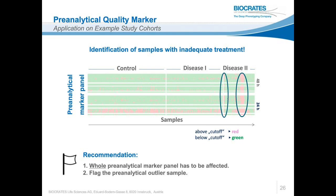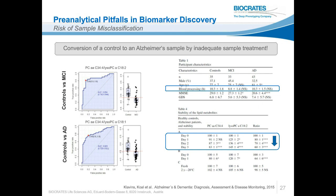To emphasize the importance of pre-analytics on biomarker candidates, an example shows how to convert a control into an Alzheimer's sample by inadequate sample treatment. In the study by Clavins et al., two ratios were found to discriminate mild cognitive impairment and Alzheimer's disease patients from healthy controls. However, the sample processing procedure — which is quite often missing in publications — revealed that storage time has a large influence on the signature. When a healthy control sample is stored too long at room temperature before processing, it is misclassified as an Alzheimer's patient sample.